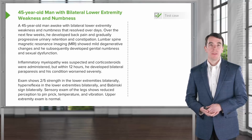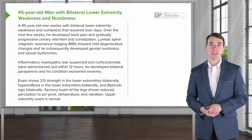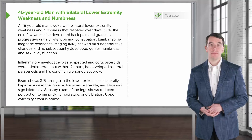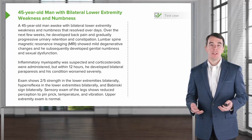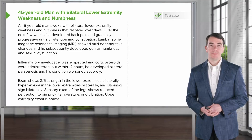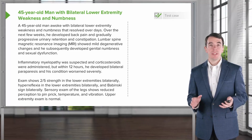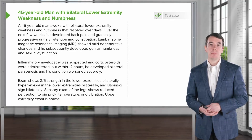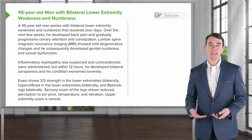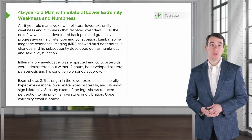Let's begin with a case. This is a 45-year-old who awoke with bilateral lower extremity weakness and numbness, which resolved over several days. Over the next few weeks, he developed back pain and gradually progressive urinary retention and constipation. Lumbar spine MRI showed mild degenerative changes, and he subsequently developed genital numbness and sexual dysfunction. Inflammatory myopathy was initially suspected, and corticosteroids were administered, but within 12 hours he suddenly developed bilateral paraparesis — weakness and numbness below the waist — with severe worsening of his symptoms.